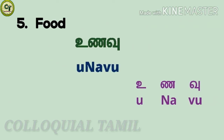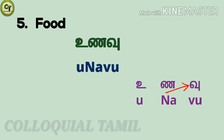Our next word: food — unavu. U, a short zone vowel. Na, a short zone letter — this is beginner. Then u, a short zone letter. Together: unavu. You can notice the similarity between the verb 'eat', which is un, and unavu. Let's go to our next word.